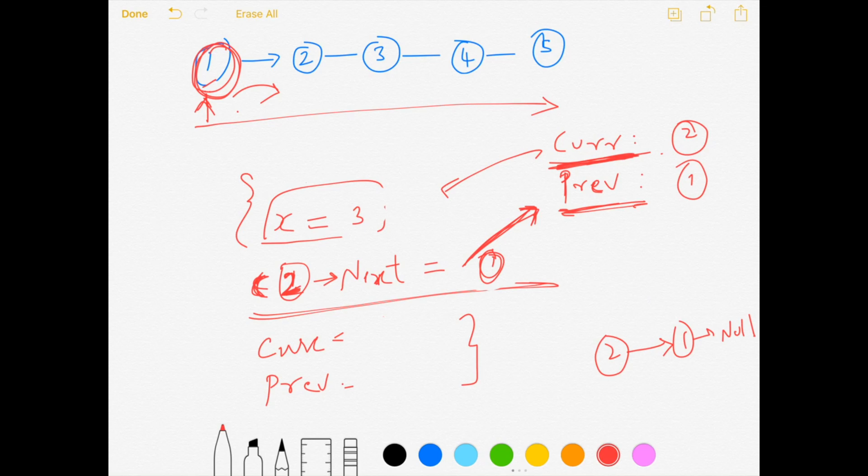And once these two are done, now we have to reset the variable for the next iteration. So my current will become the current x variable, which is going to be three. And my previous will become the current variable, which is two. Similarly, we will continue the iteration until we are at the end of our list node.